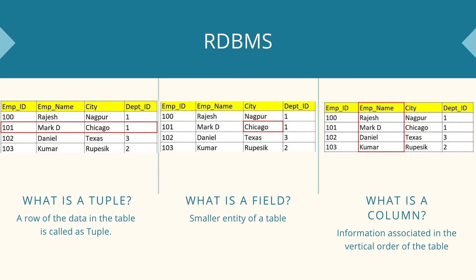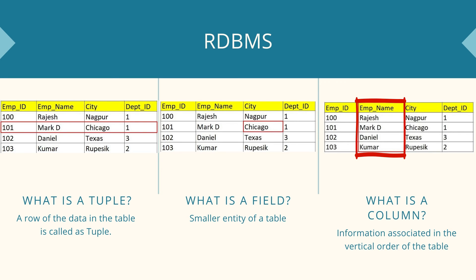In RDBMS, a row of data in the table is called a tuple. The smaller entity of a table is called a field. The information associated in the vertical of the table is called a column.